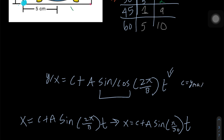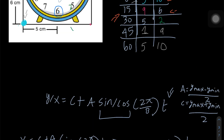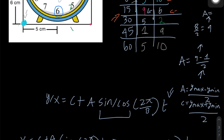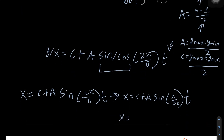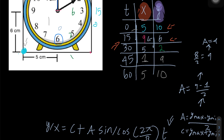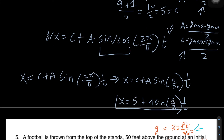We know C equals (X max + X min) / 2, and A equals (X max − X min) / 2. Our X max is 9 and X min is 1, so A equals (9 − 1) / 2 = 8 / 2 = 4. For C: (9 + 1) / 2 = 10 / 2 = 5. So C equals 5. Substituting: X equals 5 plus 4 times sine of (π/30)T. That is our X equation for the parametric.